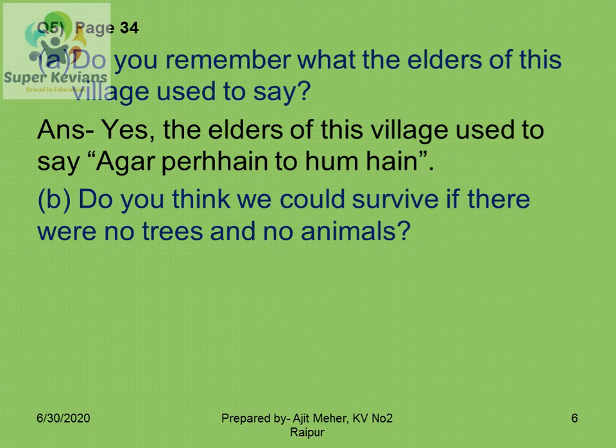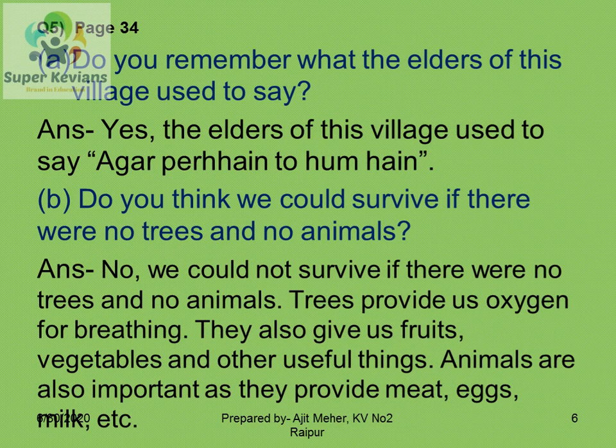The next question: do you think we could survive if there were no trees or no animals? No, we could not survive if there were no trees and no animals. Trees provide us oxygen for breathing and also give us food, vegetables, and other useful things. At the same time, animals are also important as they provide meat, eggs, milk, etc. Without them we cannot survive.